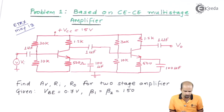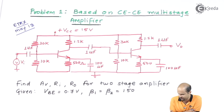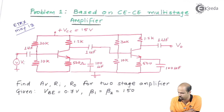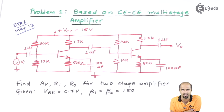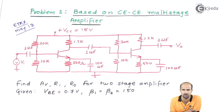The given values are: VBE is equal to 0.7 volts, and beta 1 and beta 2 are equal to 150. As beta 1 and beta 2 are given, we have to move further for the AC equivalent model of the multi-stage amplifier.